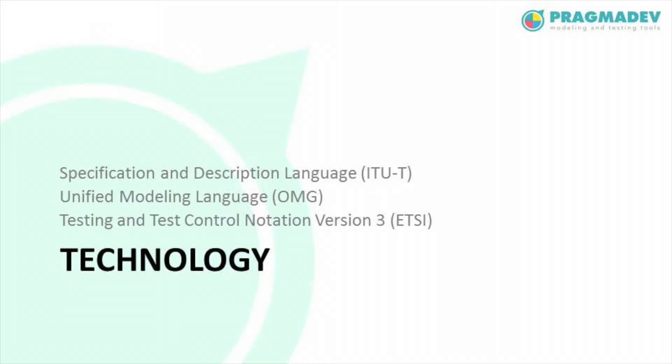Before describing the problem and solution, let me introduce the technology we use. We use the Specification and Description Language, an ITU-T standard, for modeling the system and its functional aspects. We use deployment diagrams, part of the Unified Modeling Language, to describe the distribution of components. And we use the Testing and Test Control Notation version 3, standardized by ETSI, to describe the test cases.